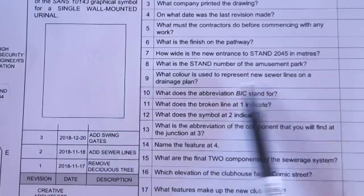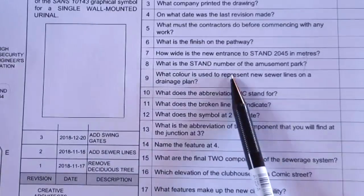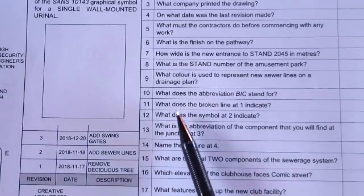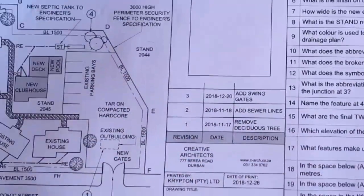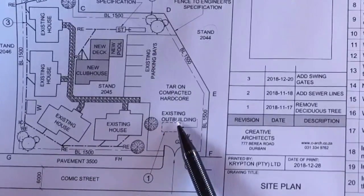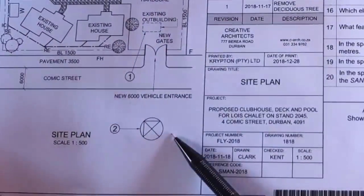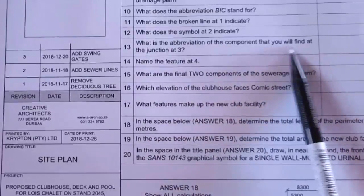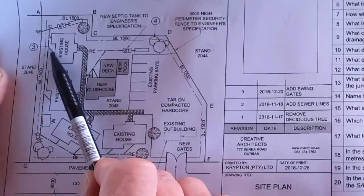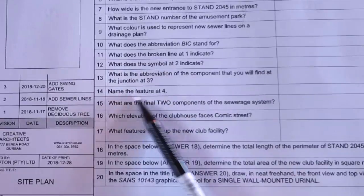What color represents new sewer lines on a drainage plan? That's brown — something you should already know. What does the abbreviation BIC stand for? Built-in cupboards — find these in your workbooks. What does the broken line at indicator one represent? It says 'Existing outbuilding' — a broken line means the building must be demolished or removed. What does the symbol at two indicate? That's the north arrow symbol. At junction three, the sewer line meets the main sewer and requires an inspection eye — abbreviation IE.